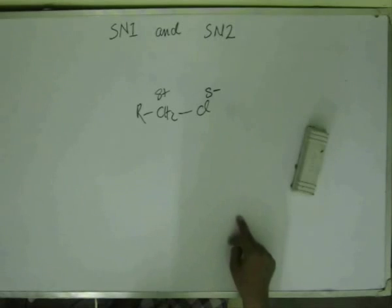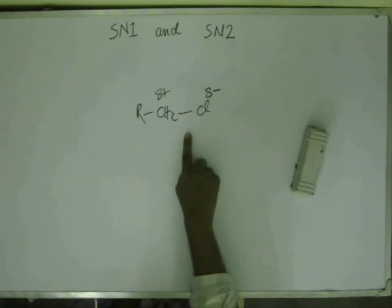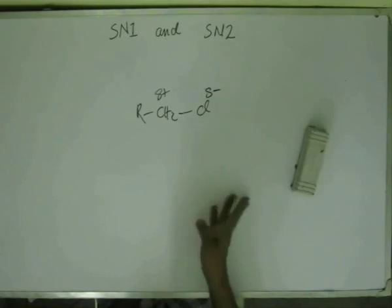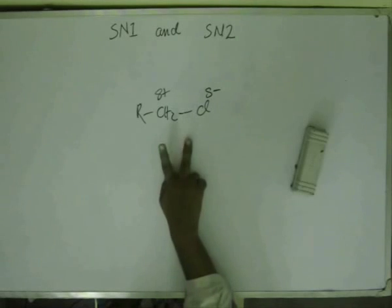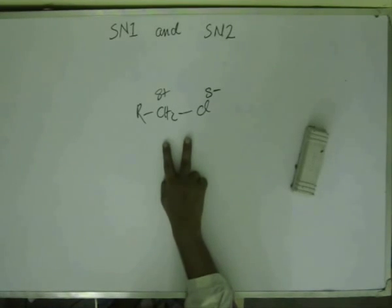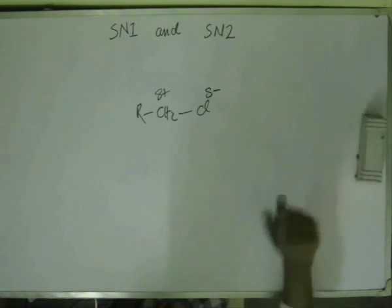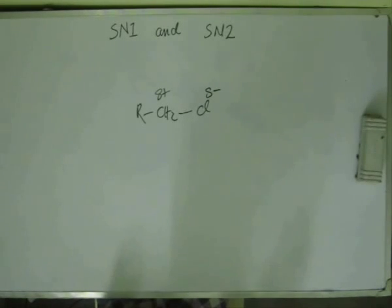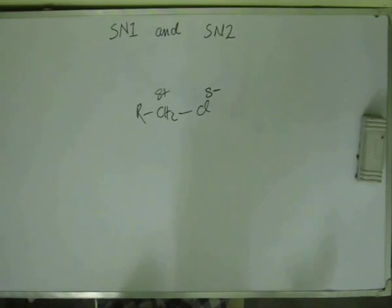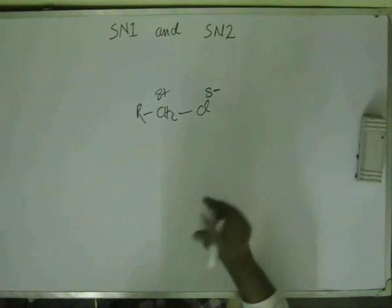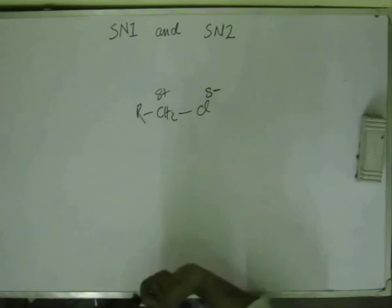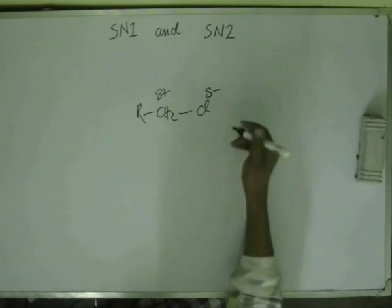If the polarity of the solvent increases, then the rate of the SN1 reaction would increase. If the polarity of the solvent decreases, then the rate of SN1 would decrease. Now, it's not only about polarity — it's about whether the solvent is polar protic or polar aprotic. Let's first assume the solvent is polar protic.